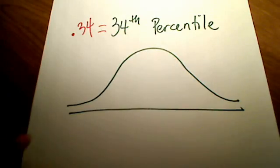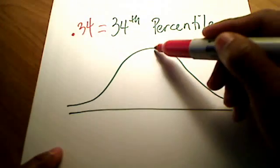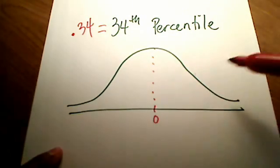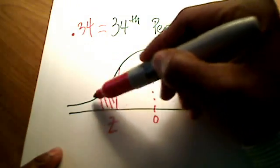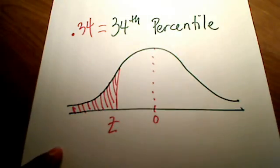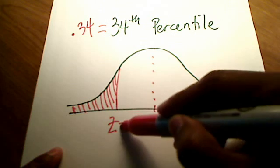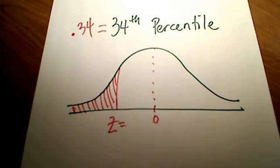So since this number is smaller than .5, then we must be referring to, zero sitting in the middle, we must be referring to some Z number over here where percentile means shaded below yours that is a negative Z number, because it's to the left of zero.